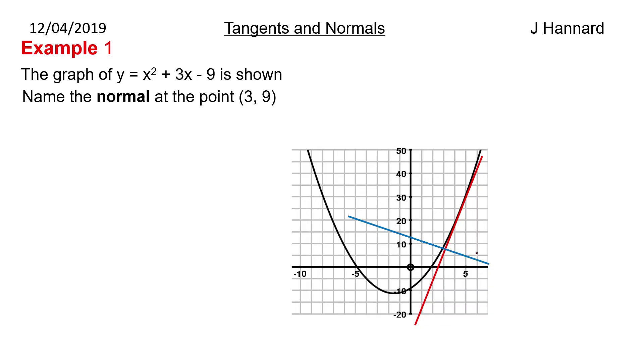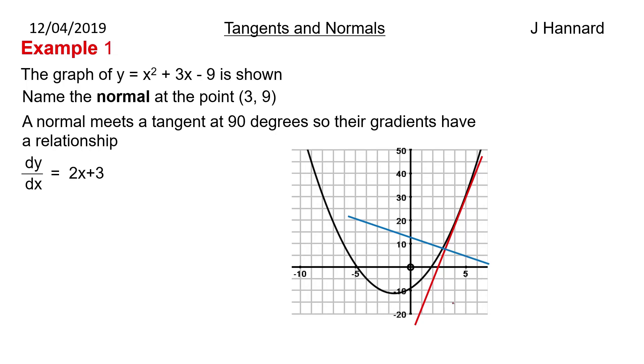So that is what a normal is. It is a line that is perpendicular to the tangent. So we want the normal at the point (3, 9). A normal meets a tangent at 90 degrees, so their gradients have a relationship. Remember what perpendicular gradients are. I think we talked about that in lesson 2 of the playlist when we talked about the gradient of a line.